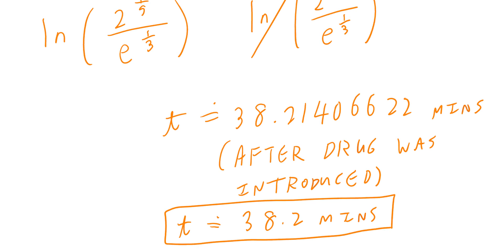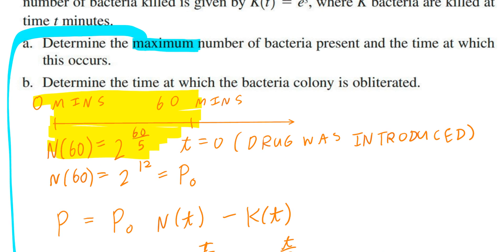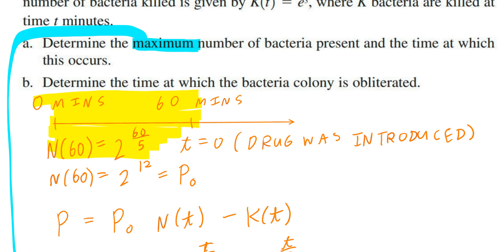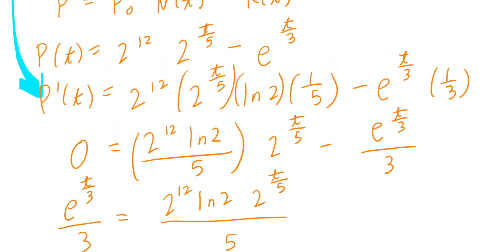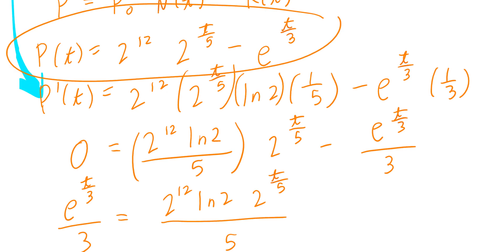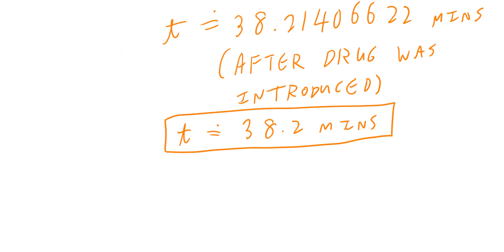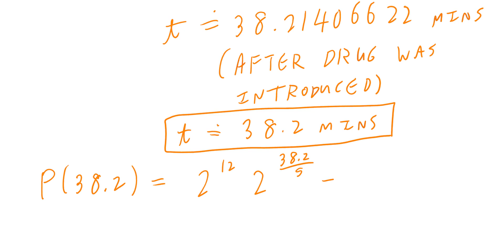Part A asks for two things: the maximum number of bacteria and the time at which it occurs. We found the time, but haven't solved for the maximum number of bacteria yet. Plug t ≈ 38.2 back in: P of 38.2 equals 2 to the power of 12 times 2 to the power of 38.2 divided by 5, minus e to the power of 38.2 divided by 3.